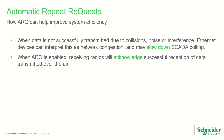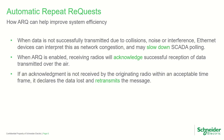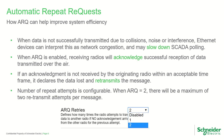When automatic repeat requests, or ARQ, is enabled in the TRIO-Q radio, receiving radios will acknowledge successful reception of data transmitted over the air. If an acknowledgement is not received by the originating radio within an acceptable timeframe, it declares the data lost and retransmits the message. The number of repeat attempts is user configurable.